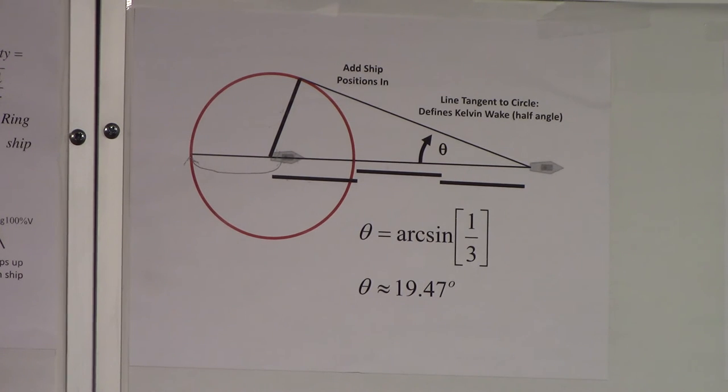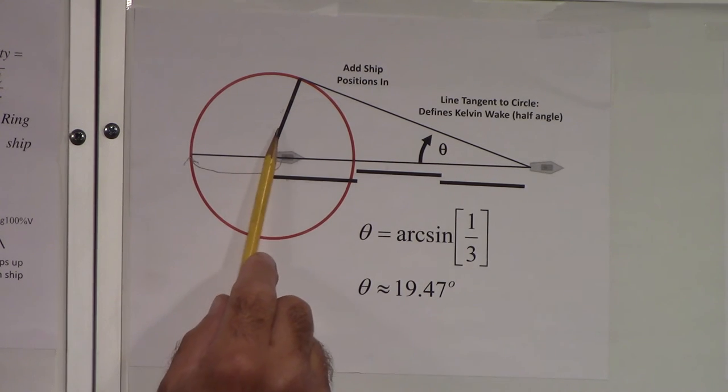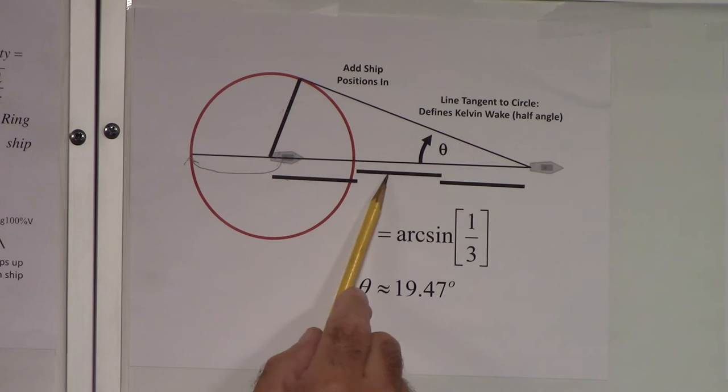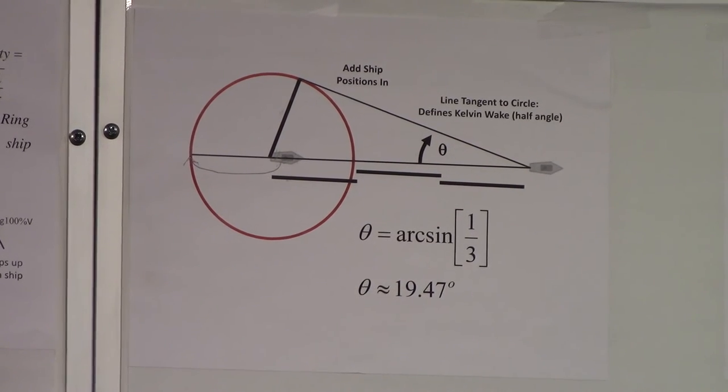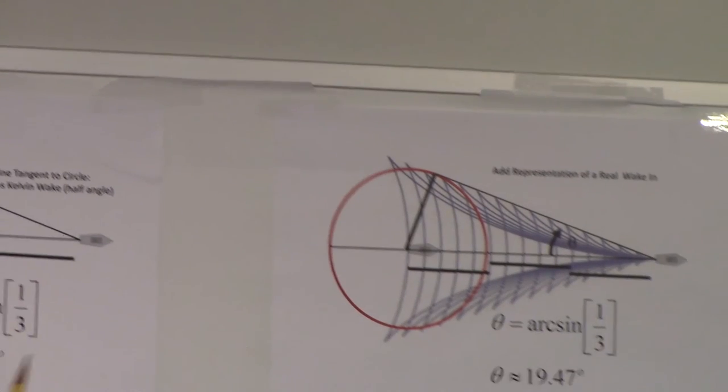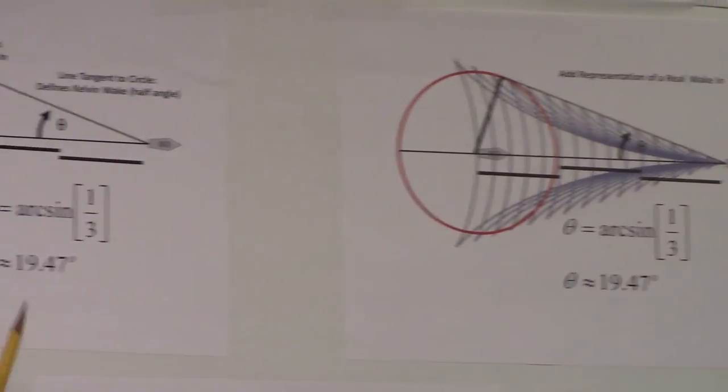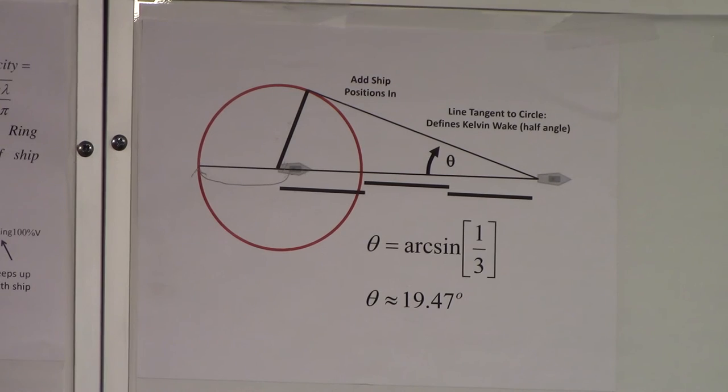These all represent the same length. We can say this angle theta is the arcsine of this distance over this, one over three. And that works out to be approximately 19.47 degrees. We found the angle. The exact angle is the arcsine of one over three, and we're approximating it by 19.47.